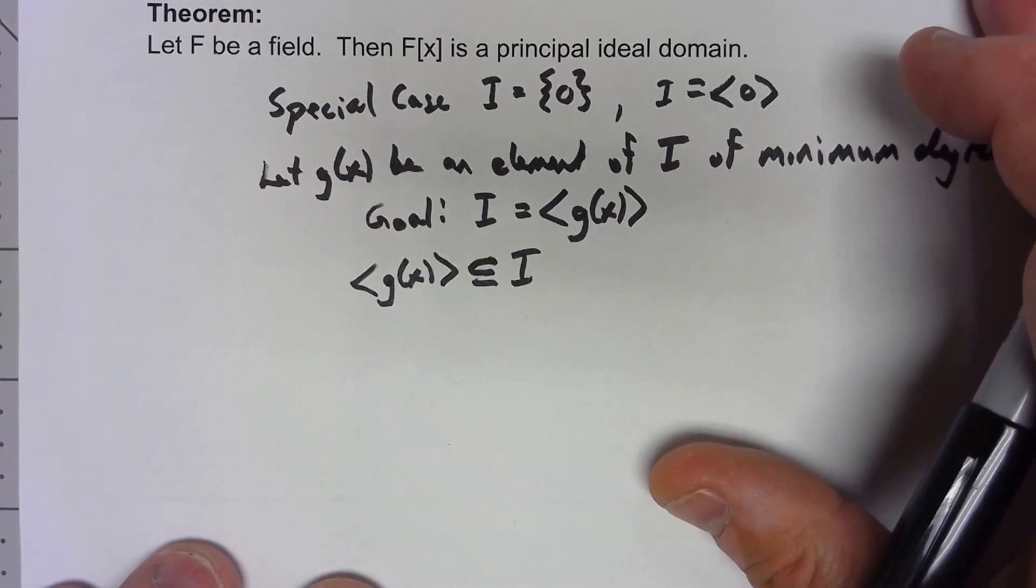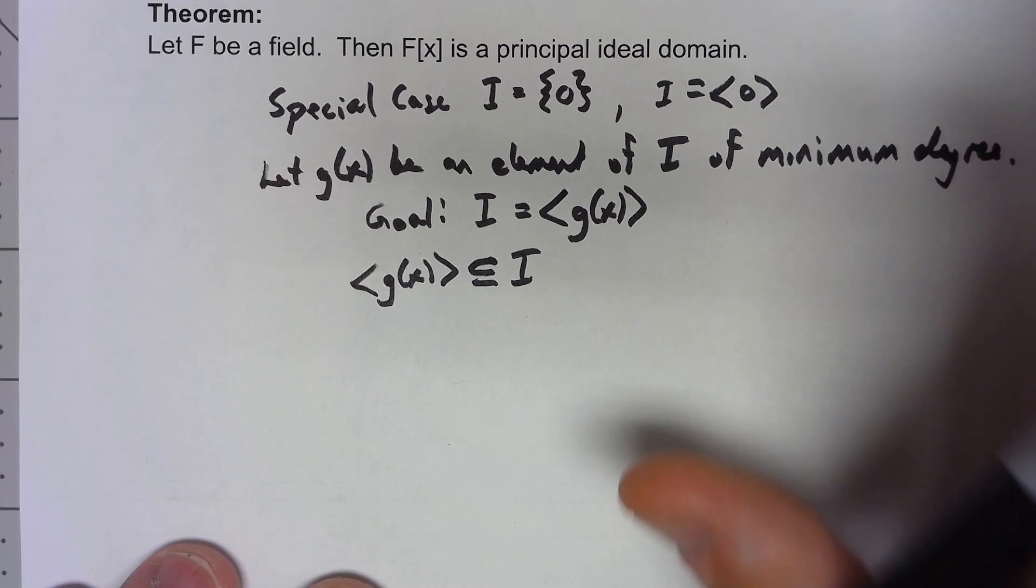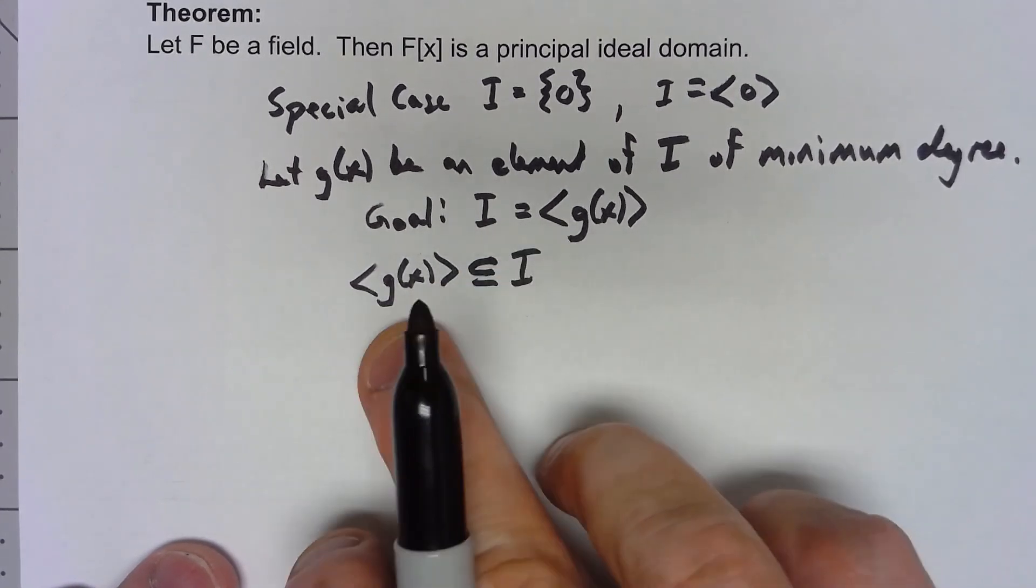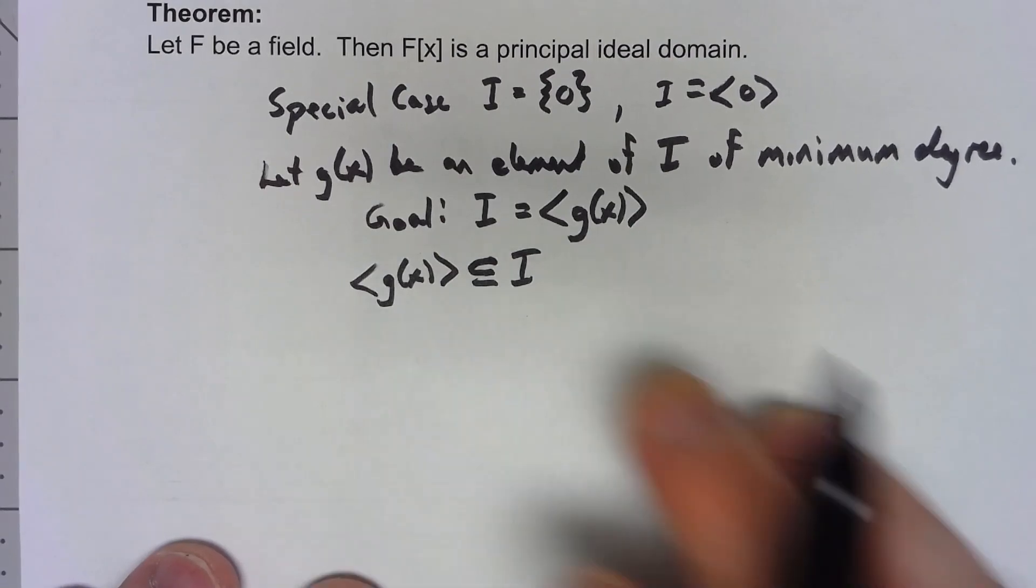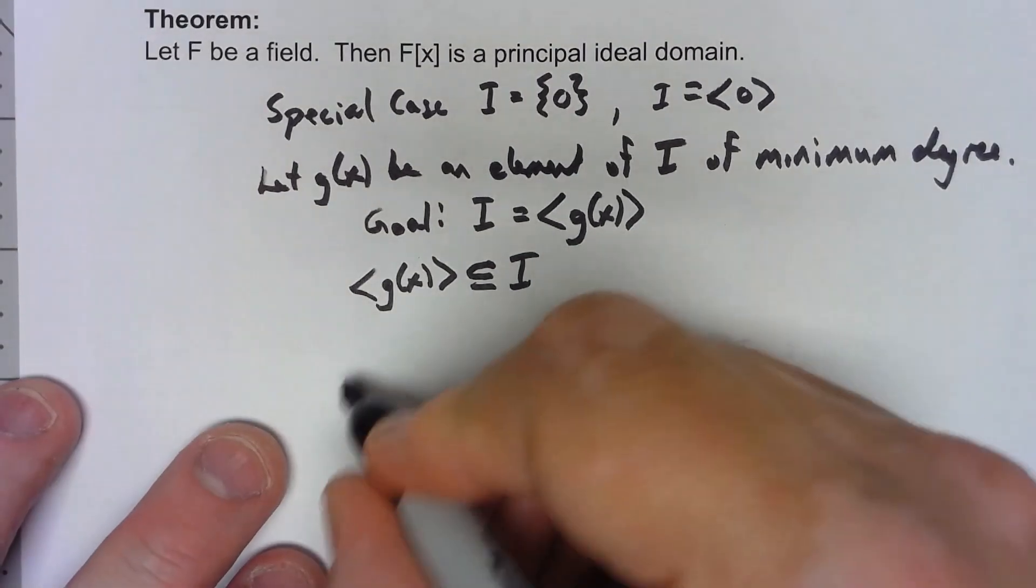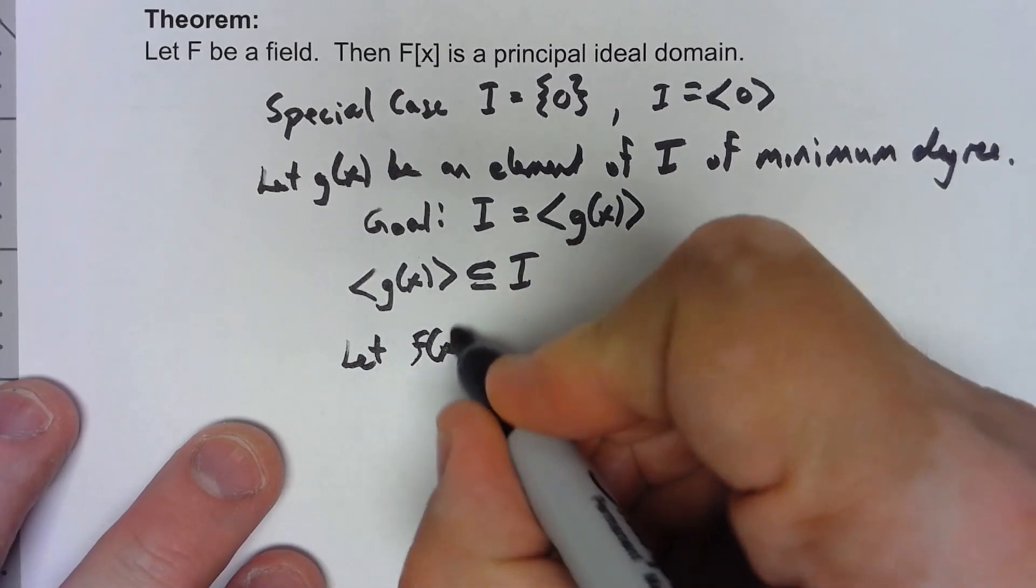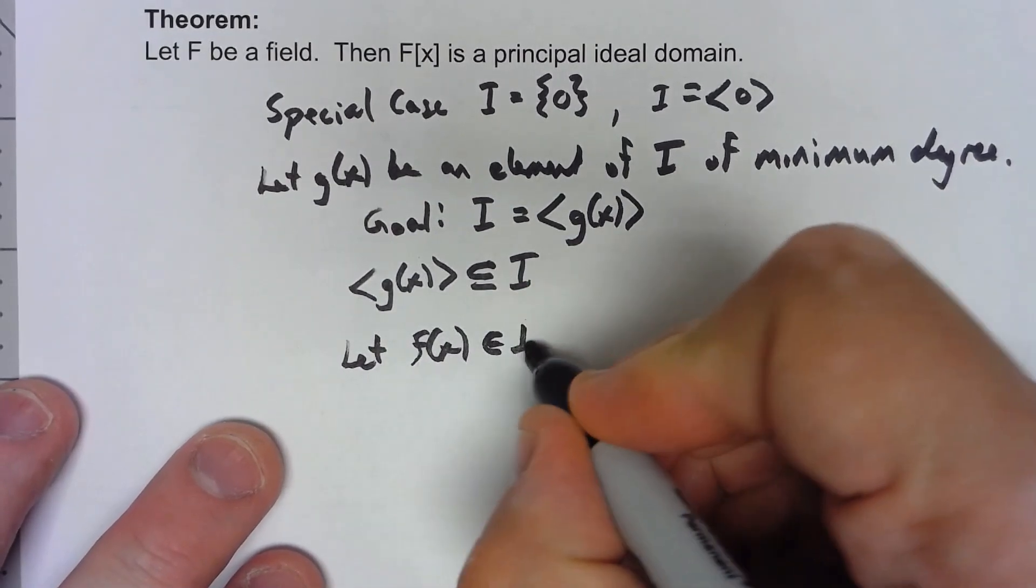Okay, so what we need to show is that there can't be anything in the ideal that's not in this. Why is that? So let's say f(x) is some element of that ideal.